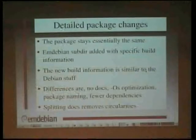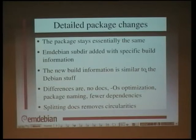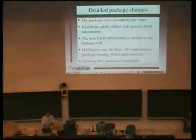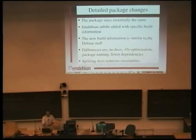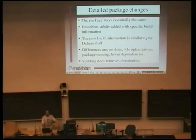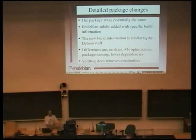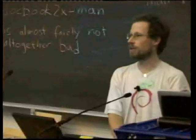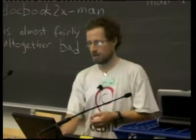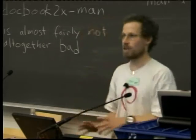The package doesn't change much. We add this mdebian subdirectory with new build info, which is usually very similar but just slightly different. Splitting the docs out is a good thing because, as Timo will tell you later in the week, the docs produce an awful lot of circular dependencies in Debian, which makes it incredibly hard to build the whole thing from scratch. You have to have Debian already in order to build Debian — a bit of a pain for embedded systems where you'd really like to be able to build the whole thing from a toolchain up from glibc upwards, because that way it definitely comes out right.